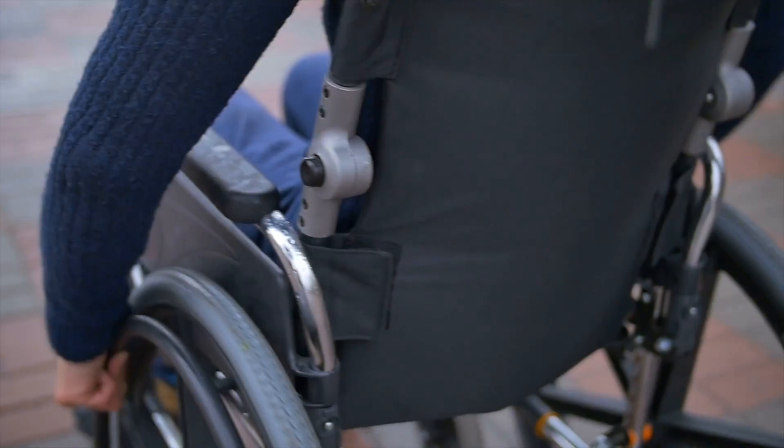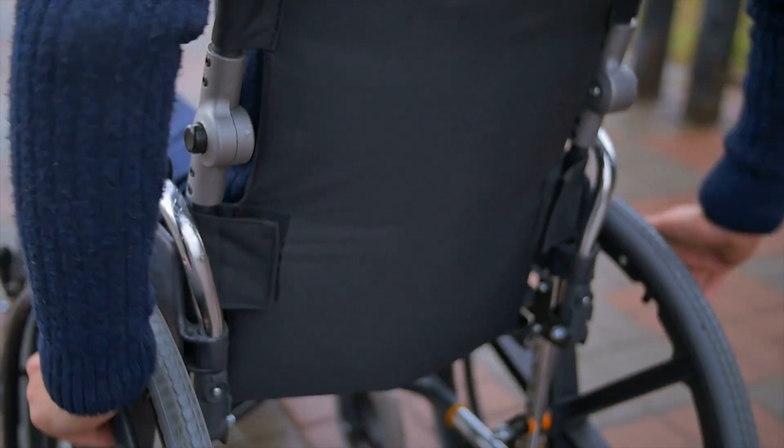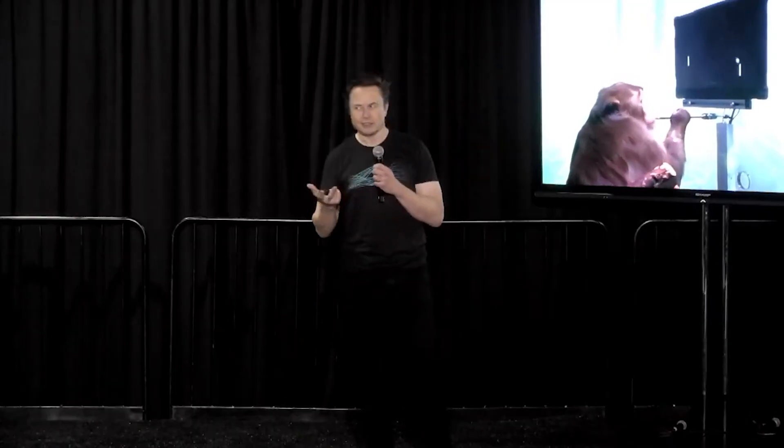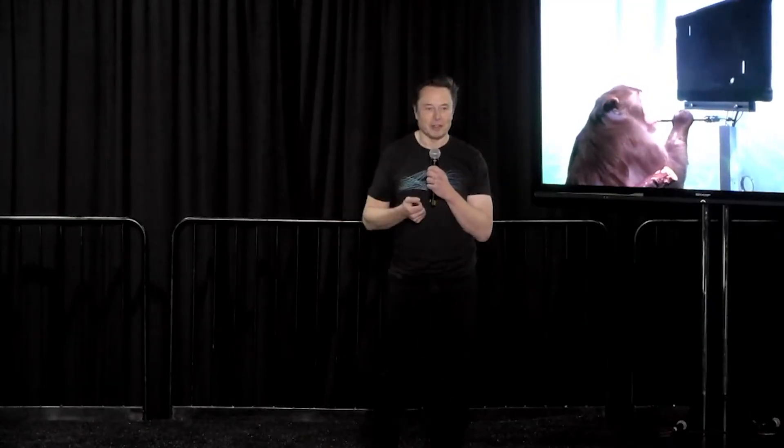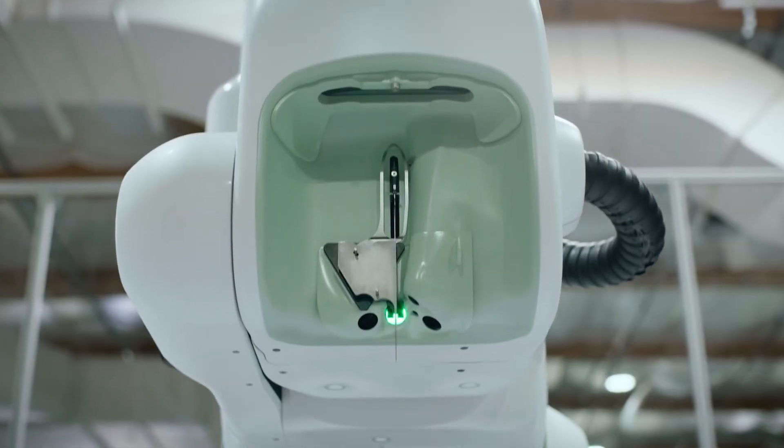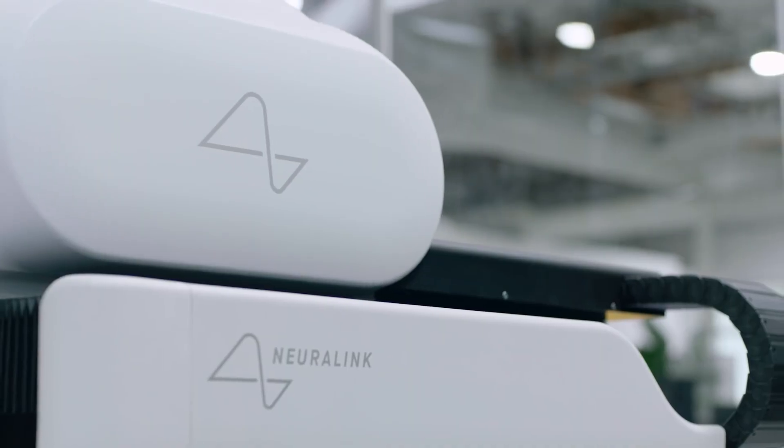This is a technology that will aspirationally help the paralyzed to walk and the blind to see. And this isn't just one of Elon Musk's science fiction dreams anymore. Neuralink expects to begin their first round of human trials within the next six months. Here is how Neuralink is taking brain implants mainstream.